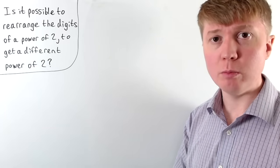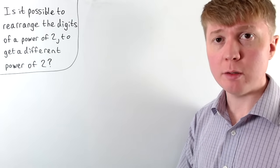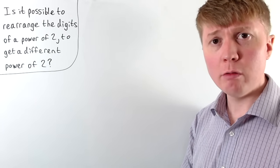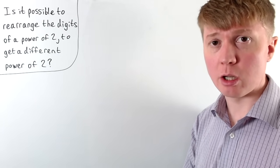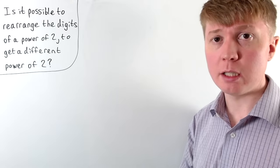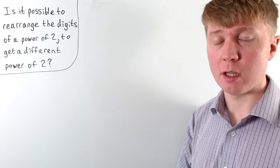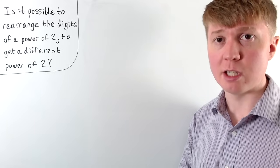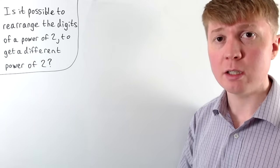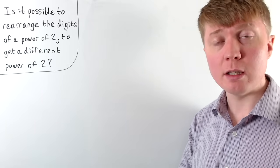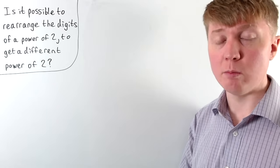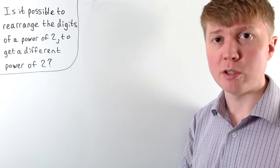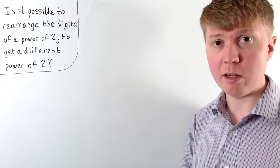We're going to solve this problem where we want to see if it's possible to take a power of 2, rearrange its digits, and then get a different power of 2 as our answer. If our original power of 2 has any zeros as digits, the new power of 2 isn't allowed to begin with zero, so we can't have numbers that supposedly begin with zero.